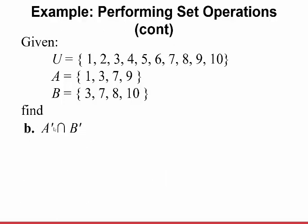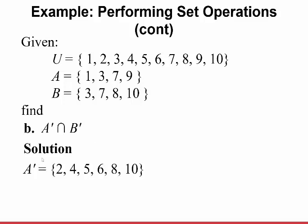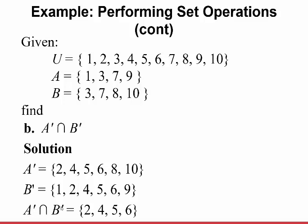Now find A complement intersection B complement. First find A complement: A is {1, 3, 7, 9}, so A complement is {2, 4, 5, 6, 8, 10}. Then find B complement: B is {3, 7, 8, 10}, so B complement is {1, 2, 4, 5, 6, 9}. Now find their intersection — what elements do they have in common? That's {2, 4, 5, 6}. So A complement intersect B complement equals {2, 4, 5, 6}. Notice how I did this piecemeal — I broke it down step by step.